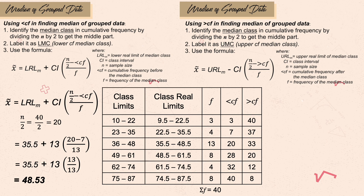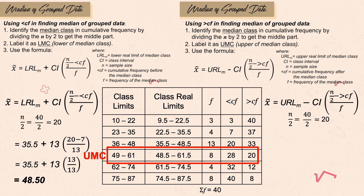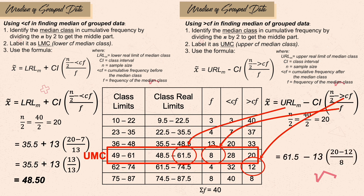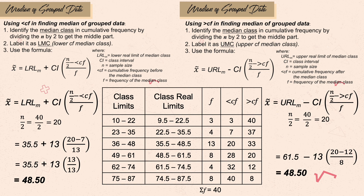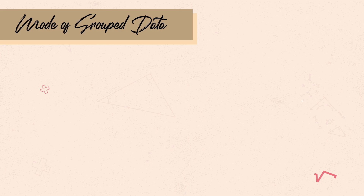For the greater cumulative frequencies method, do the same first step and get the median class equal to 20. The upper median class is identified from the greater cumulative frequency column. The values are: url sub m is 61.5, the greater cumulative frequency after is 12, and frequency is 8. Substituting: 61.5 − 13 × (20 − 12) / 8. Solving this gives 48.50 — essentially the same answer — so you can use either the lower or upper median class formula.